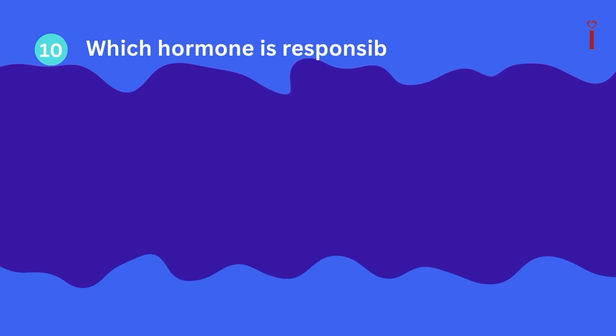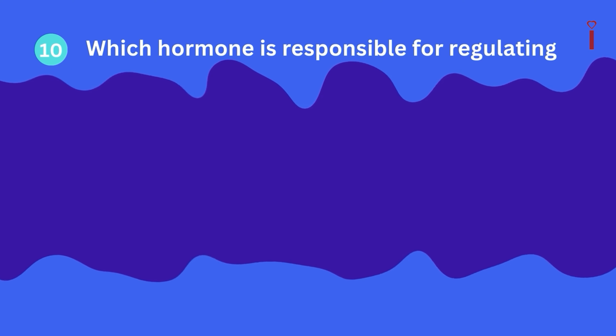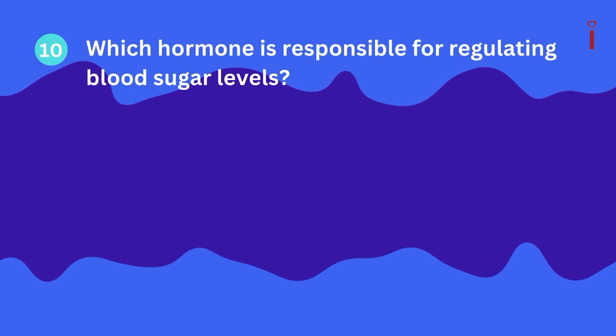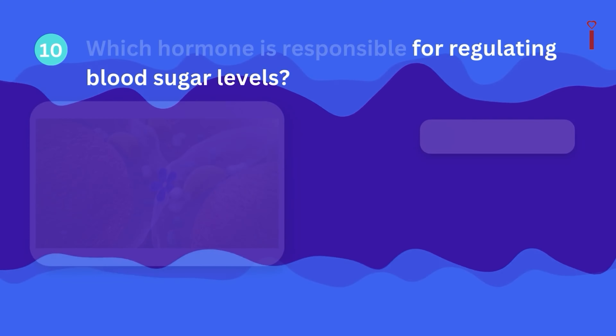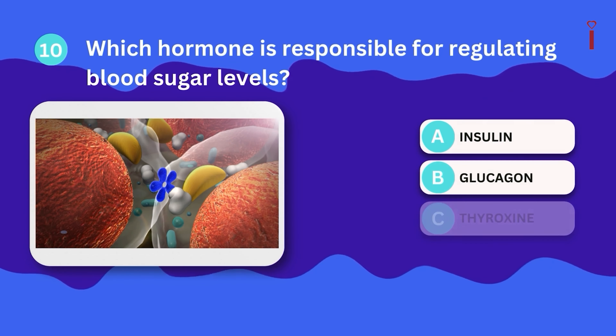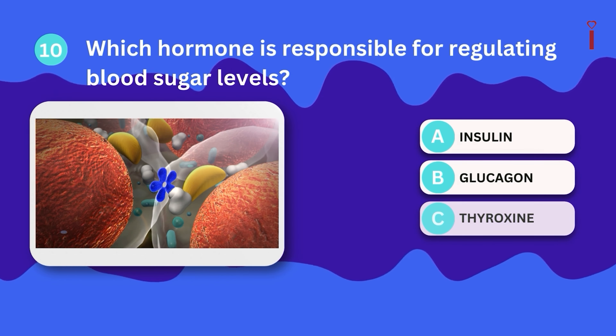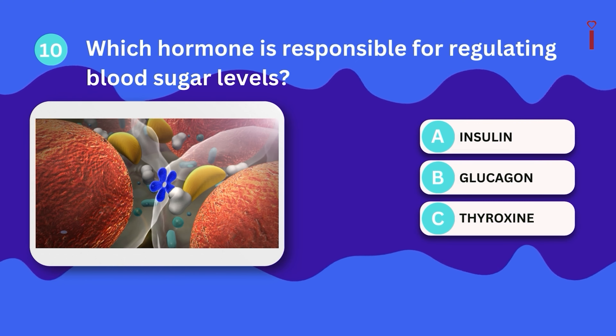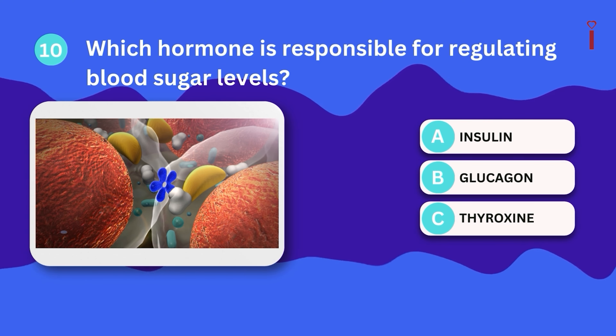Question 10: Which hormone is responsible for regulating blood sugar levels? A. Insulin, B. Glucagon, C. Thyroxine?